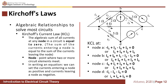Let's take a look at this figure. We have four nodes: node A, node B, node C, and node D. Take note that a node is a point where two or more circuit elements meet.